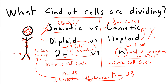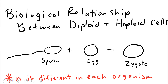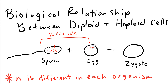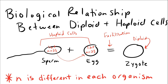We have two haploid cells: the sperm and the egg. For humans, sperm has N equals 23, and the egg also has N equals 23. When that egg is fertilized — at fertilization, for sexually reproductive organisms — this sperm fuses with this egg, and you get your first diploid cell: the zygote. Adding N plus N, or 23 plus 23, gives you 2N equals 46 chromosomes.